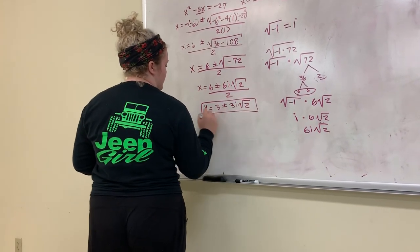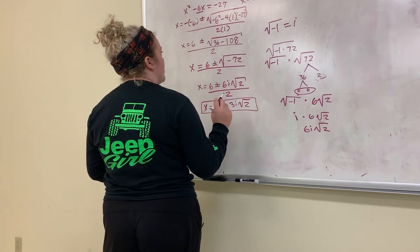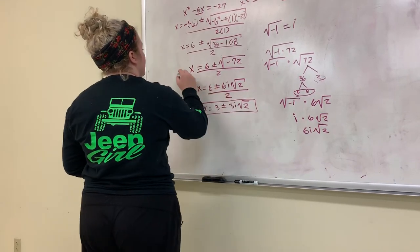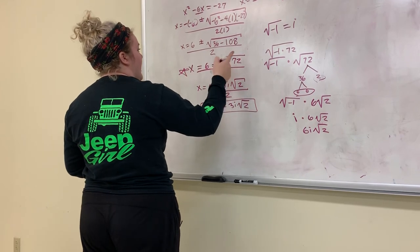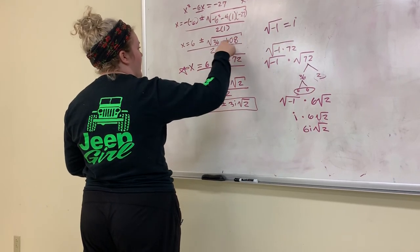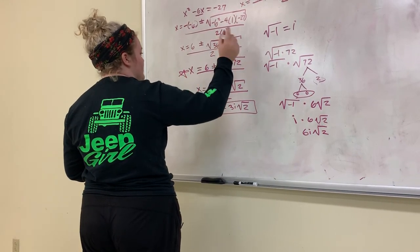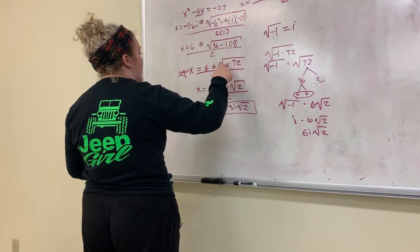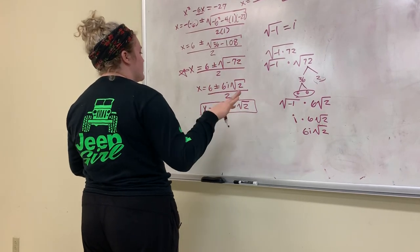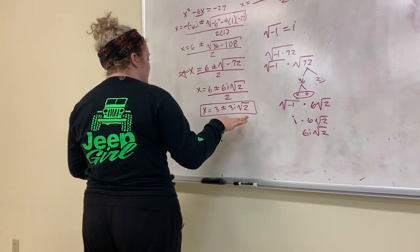And this is how we get the answer. I got it wrong originally because on this step right here, I didn't use the correct subtraction. I ended up leaving it as positive 72, which messed all the steps up. So after knowing that, I know how to do this.